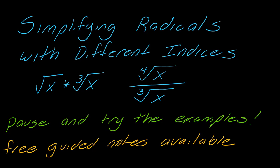Hey guys, let's talk about simplifying radicals with different indices. So what I'm specifically talking about are problems like this, so like a square root times a cube root, so either multiplying them together or dividing them.